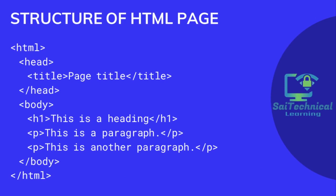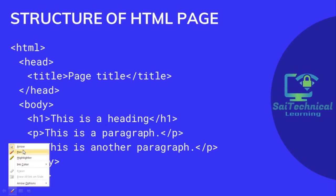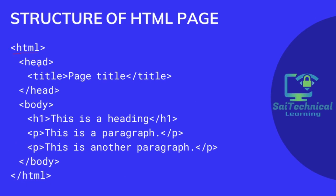Structure of an HTML page: whenever we write an HTML page we need to follow this structure. First the HTML tag, followed by the head tag which contains a title — that title is displayed on the browser's tab. Then the body tag, which contains h1 and p tags. All web page contents are part of the body tag, which is then closed along with the HTML tag.